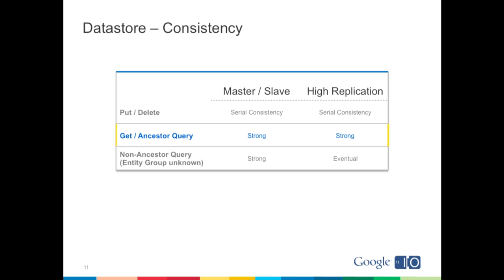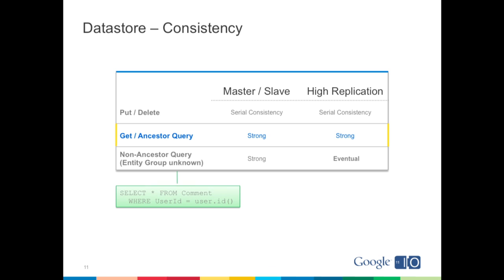Speaking of consistency, this is a very important difference between the High Replication and Master-Slave datastores. There's really only one difference: eventual consistency for non-ancestor queries — queries where the entity group is not known ahead of time because the query spans multiple entity groups, so there's no way to enforce strong serial consistency. An example of a non-ancestor query is 'SELECT * FROM comment WHERE userid = user.id'. However, using the second entity grouping, you can use 'SELECT * FROM comment WHERE ancestor IS user.key', which guarantees you see all the most recent results. For a user, this is very important: they put a comment, you redirect them to the page showing that comment, and they really want to see it — or they think your site is broken.